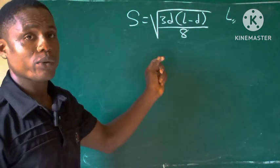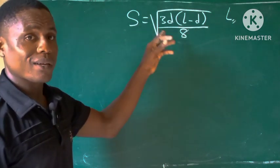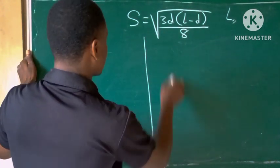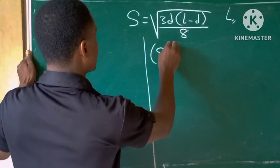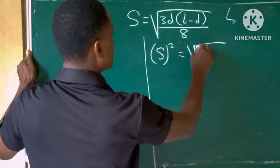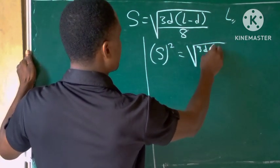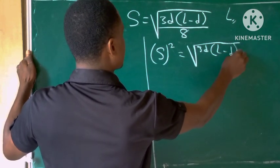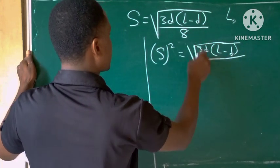So the first thing we need to do is to cancel out the square root by squaring both sides. So we have s squared equal to the square root of 3d(l minus d) all over 8, squared.